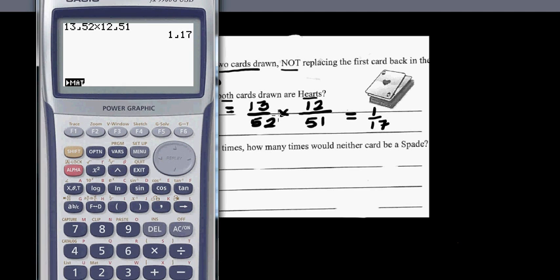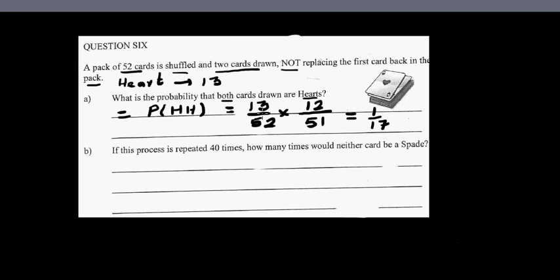1 out of 17. So the probability is 1 out of 17. Or if you don't want to use a calculator, 13 goes in 51 how many times? 13 times what? This is 17. So you can simplify that without a calculator, but if you use a calculator it is 1 over 17.